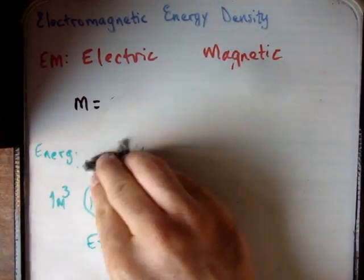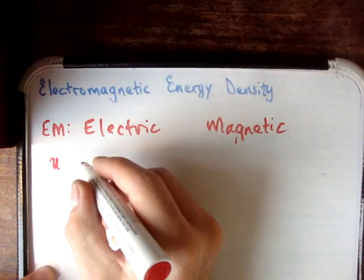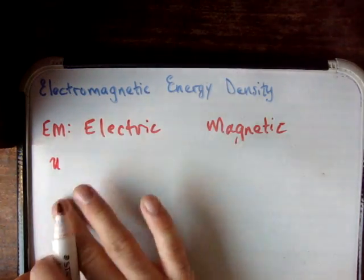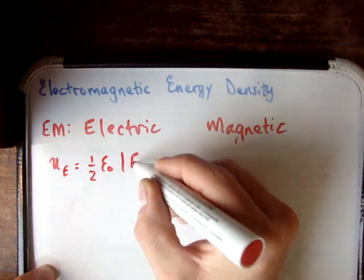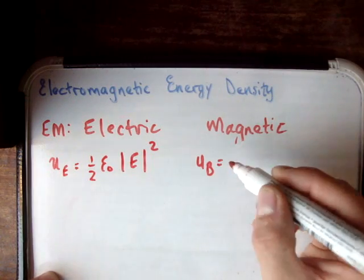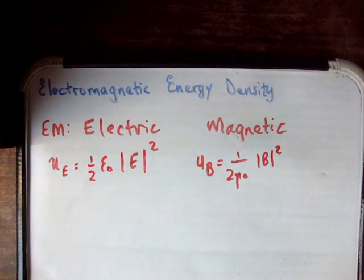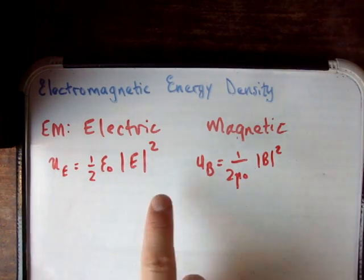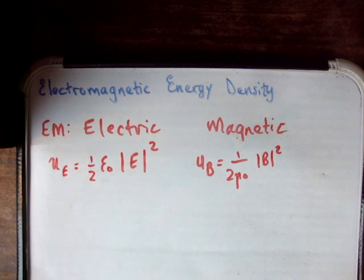Let's define what the electric and magnetic energy densities physically are. The energy density of an electric field — I'll call it u_e — is one half times ε₀ times the magnitude of the electric field squared. And u_b, the energy density of the magnetic field, is one over 2μ₀ times the magnetic field squared. Here ε₀ is the permittivity of free space, describing how well your medium transmits electric fields, and μ₀ is the permeability of free space, describing how easily your medium gets magnetized.